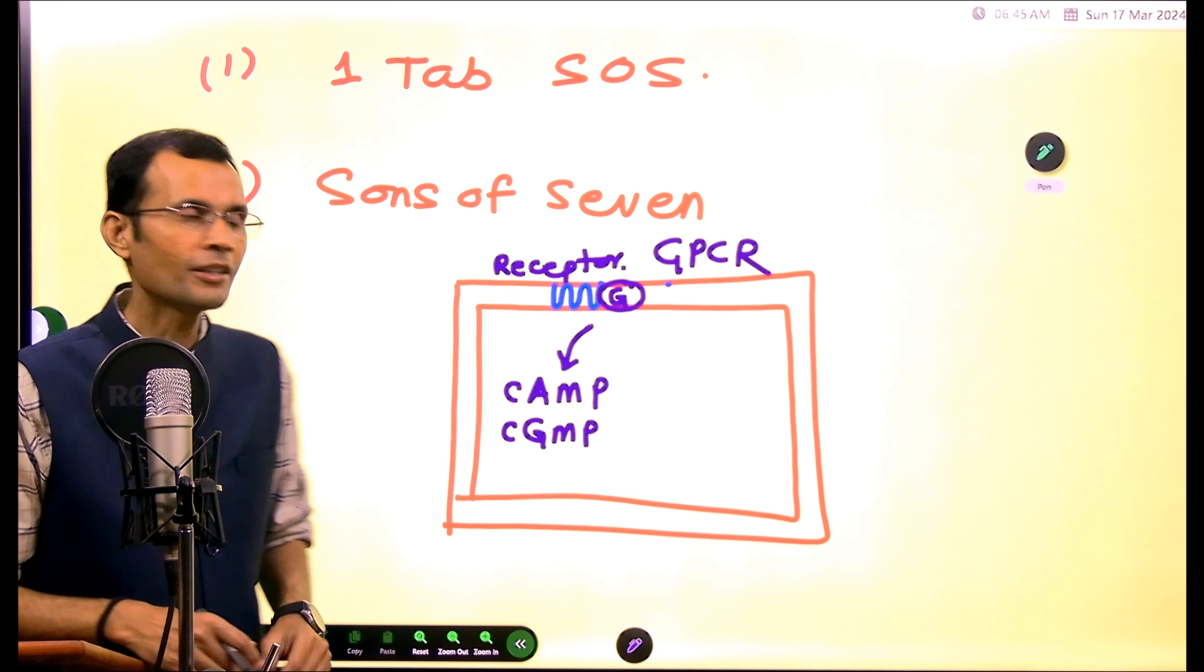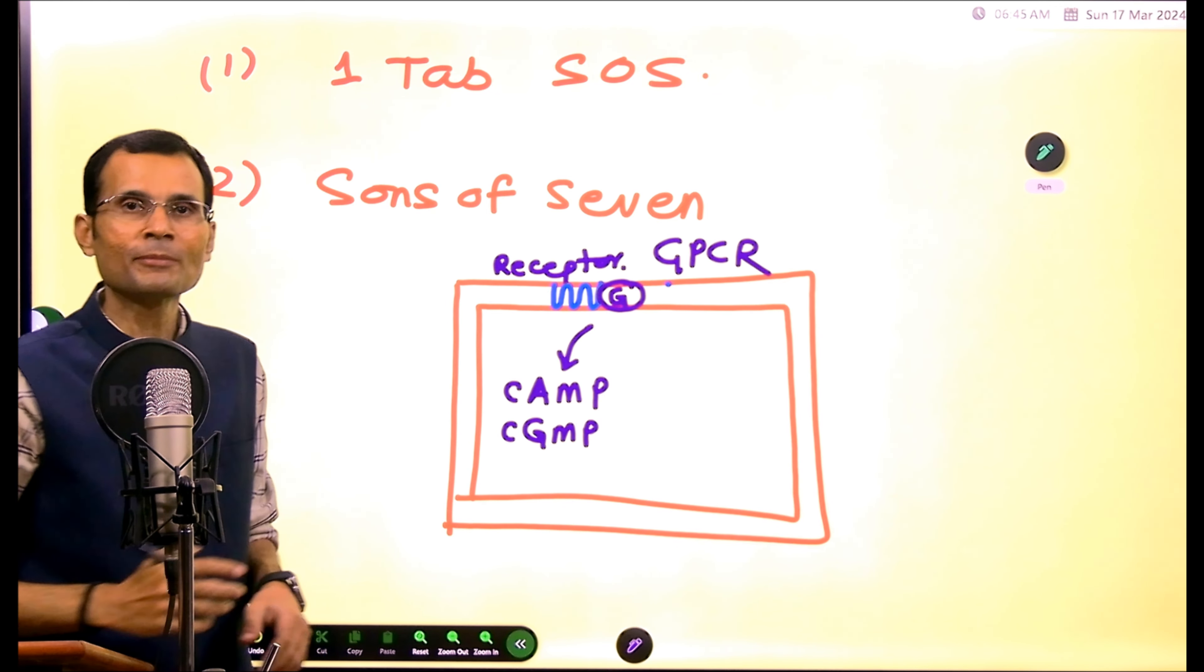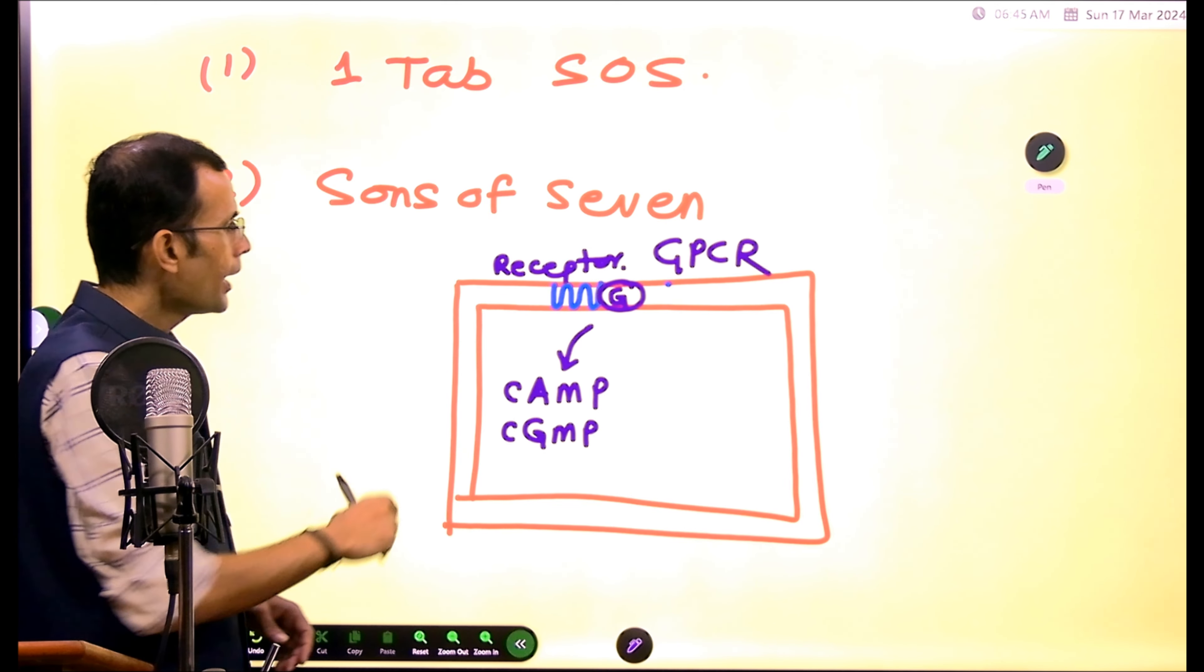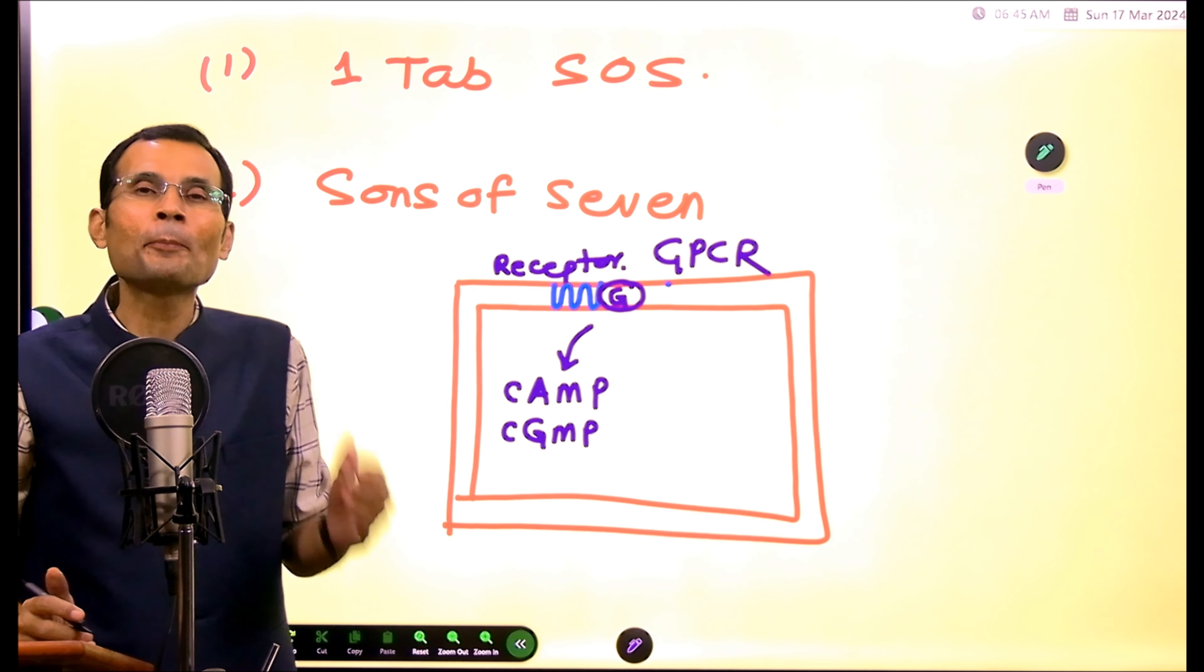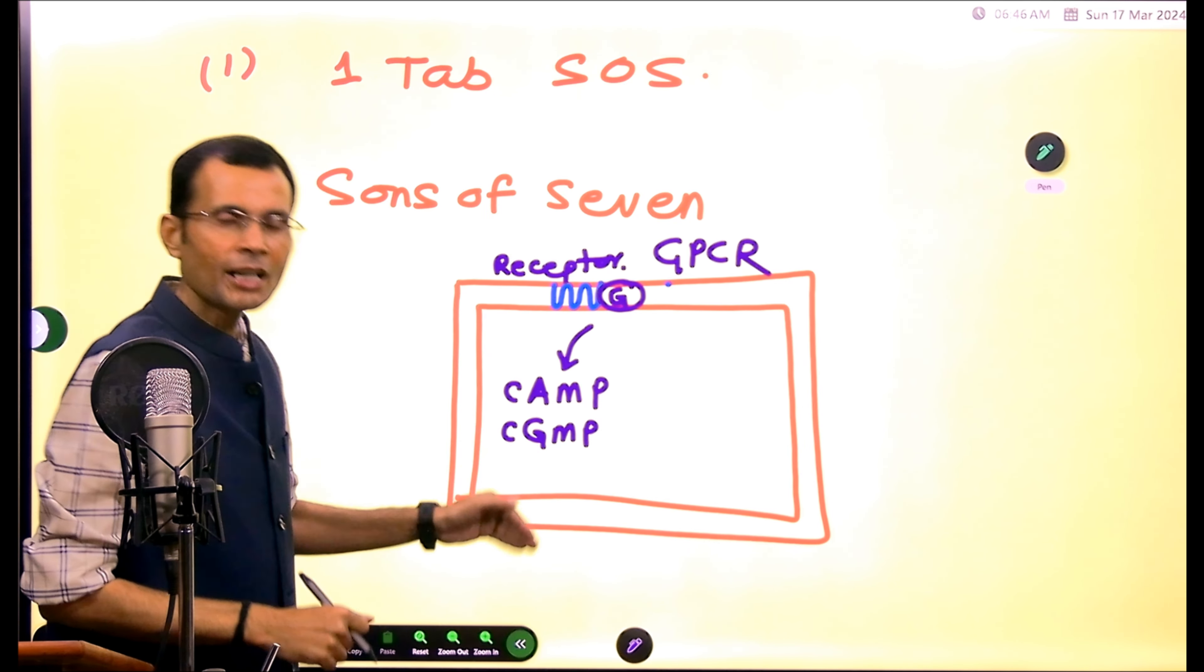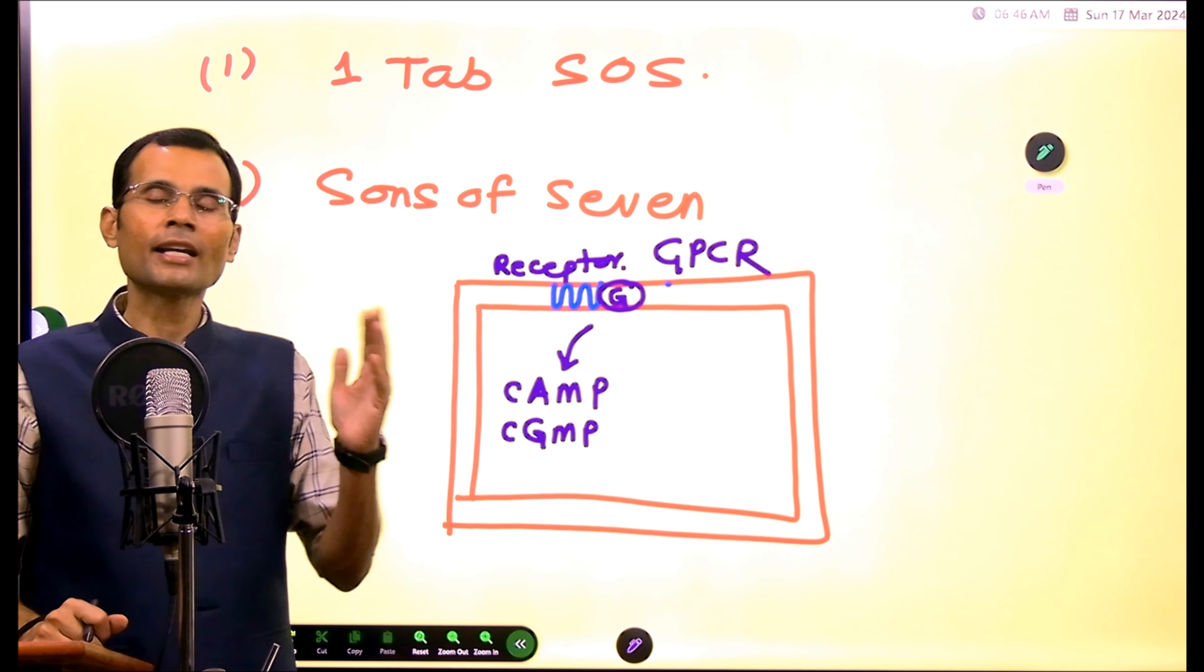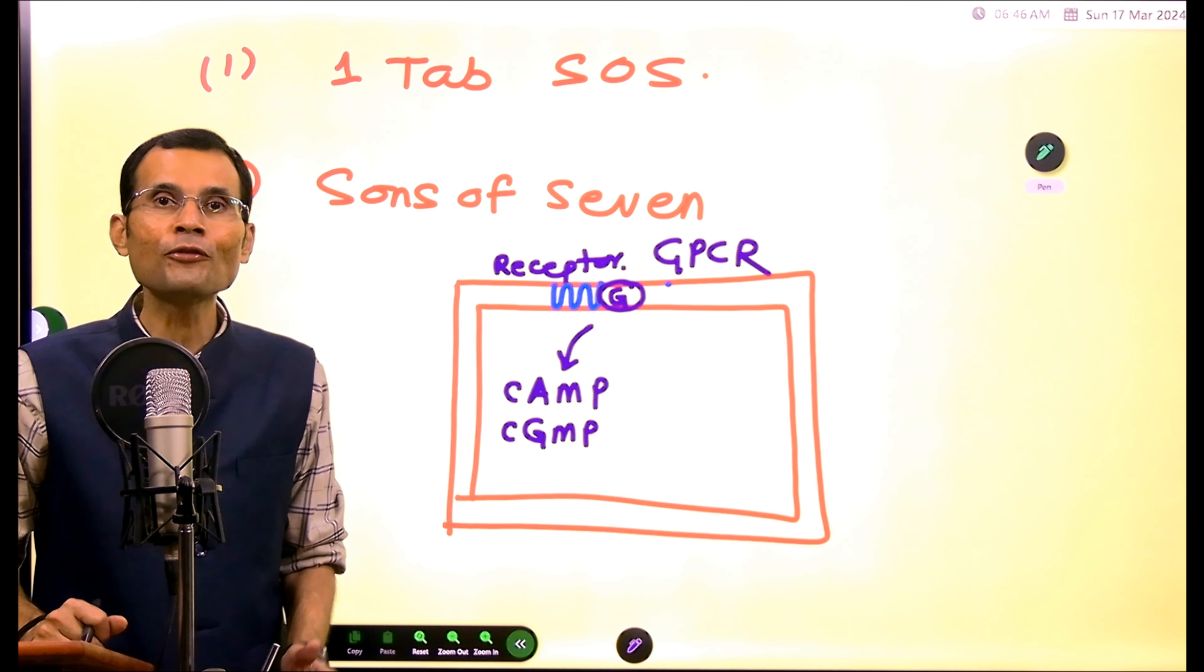The receptor spans the membrane seven times. It has got seven transmembrane segments and it's like a snake, so it is also called a serpentine receptor. Now when the hormone comes and binds to the receptor, there are certain second messengers generated inside the cell, like cyclic AMP, like cyclic GMP. These are called as sons of seven.